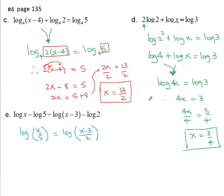Now I have single logs. Therefore, I can drop the logs. They're all the same base. The base here is understood to be ten. So I can drop the logs and say, therefore, x over five equals x minus three over two.